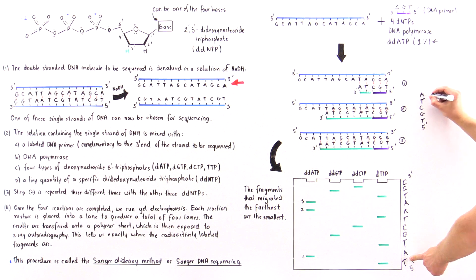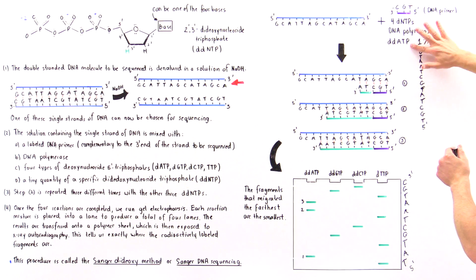We have TAT, then we have GCT, then we have AATGNC, and that's the three prime end.